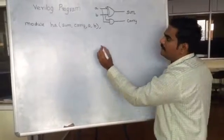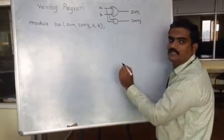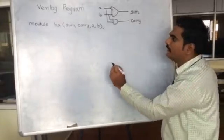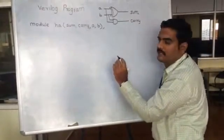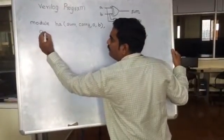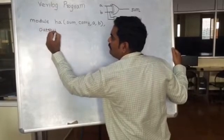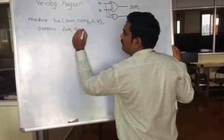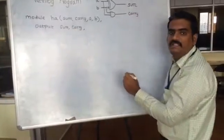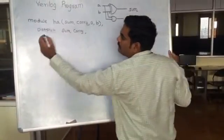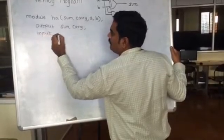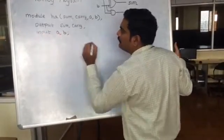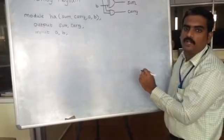Next we have to define whether these signals are output signals or input signals. We know that sum and carry are the output signals, so I will define output sum, carry. Likewise, I have to define input A, B. Now we will write the gate level program.